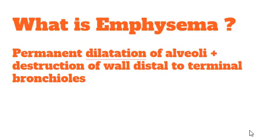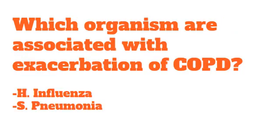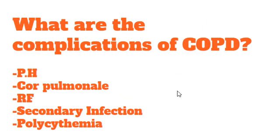What is the organism associated with exacerbation of COPD? The answers are Haemophilus influenzae and Streptococcus pneumoniae. If a patient is having acute exacerbation of COPD, we vaccinate the patient with Haemophilus influenzae vaccine.